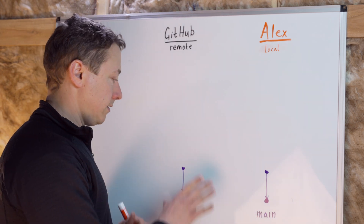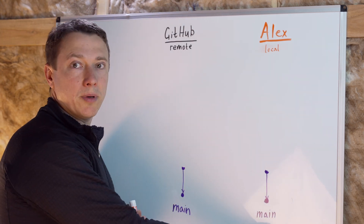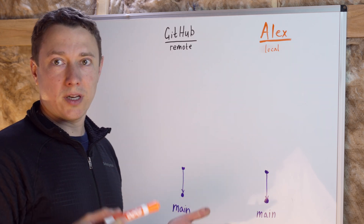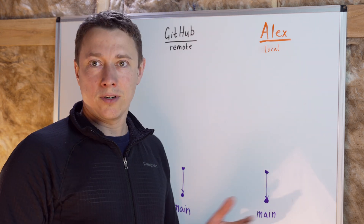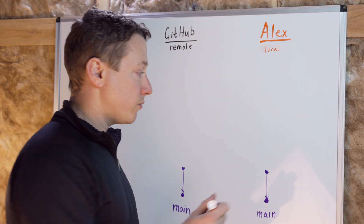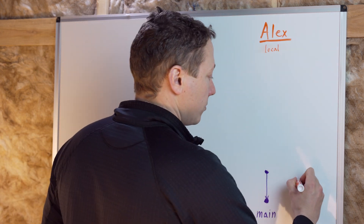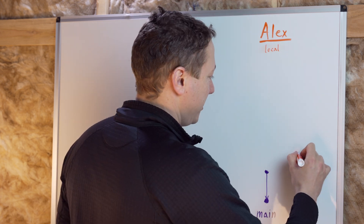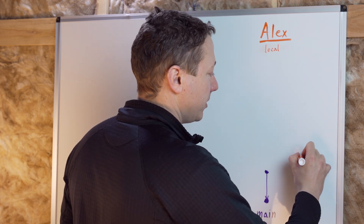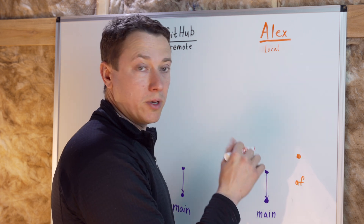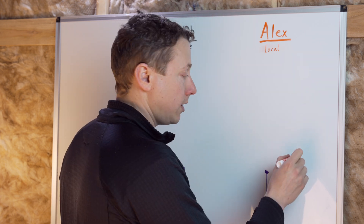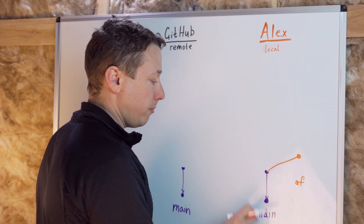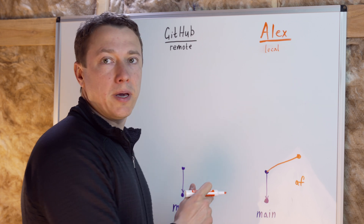At the very beginning, your local copy is exactly the same as remote. But then at one point you decide to create a feature — an awesome feature — and you create a feature branch for it. You create a feature branch AF and push the first commit into that branch. That first commit has the latest commit of main as a base.